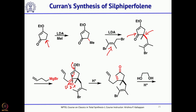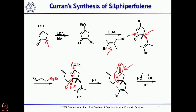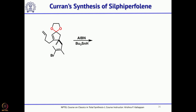One problem with this compound is that it is a Michael acceptor. While the first 5-exo-trig radical cyclization would work, the second exo-radical cyclization may not. Therefore, it is better to protect the carbonyl group. The carbonyl was protected as an ethylene ketal by treating with ethylene glycol and acid, after which the key tandem radical cyclization was carried out.